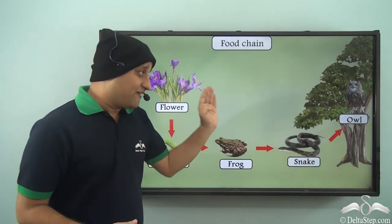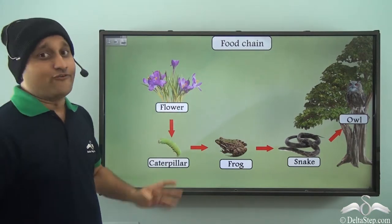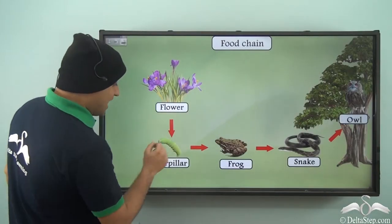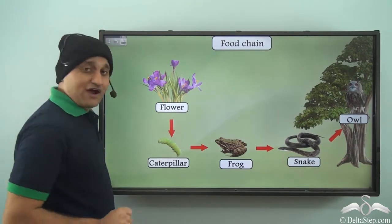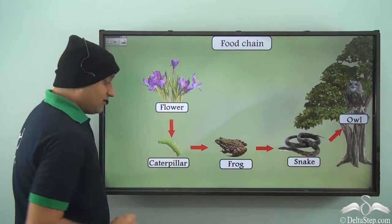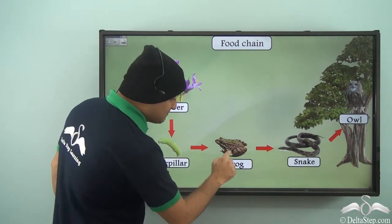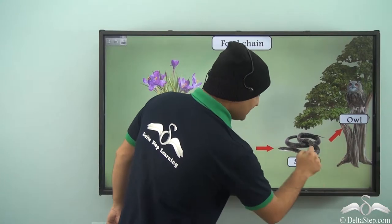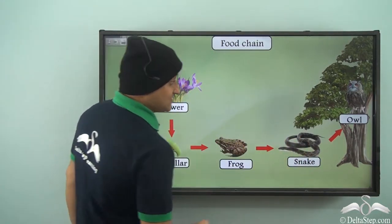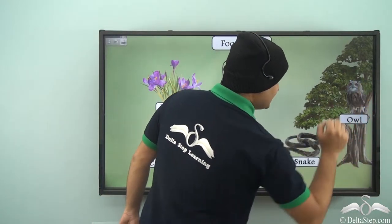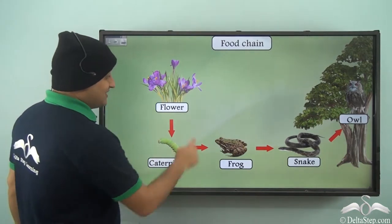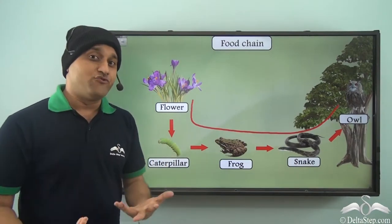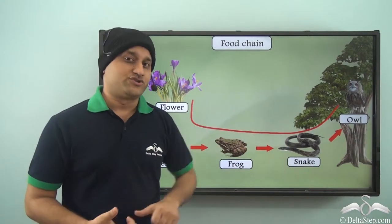Here is a very common example of a food chain in the ecosystem. Caterpillars are dependent on flowers — that is, they eat the flowers. These caterpillars are then eaten by frogs, the frog is eaten by the snake, and the snake is eaten by the owl. So you can see they form a food chain, and this is how a food chain exists in the ecosystem.